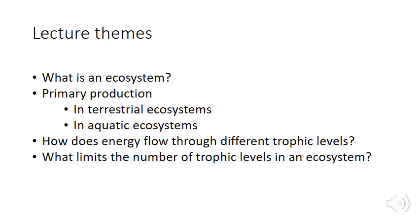To go through the lecture themes: we'll start by defining what an ecosystem is, because for the rest of the lecture we'll be talking about primary production — the harnessing of energy from the sun by plants, green algae, and phytoplankton. This process is inextricably linked to abiotic factors like precipitation, temperature, and the supply of nutrients, so we have to look at things with an ecosystem perspective rather than just focusing on the organisms themselves.